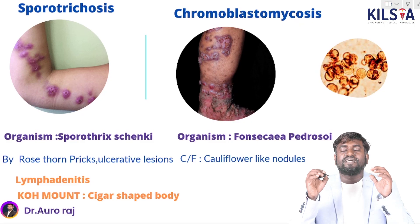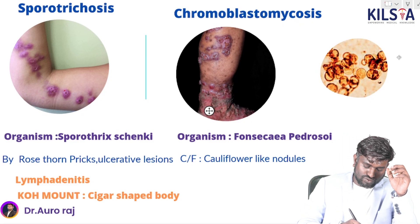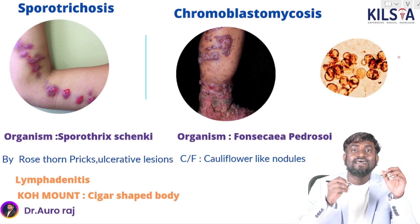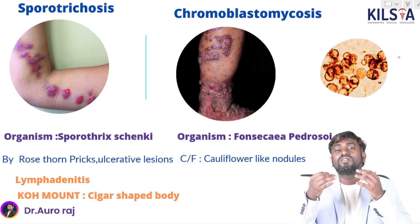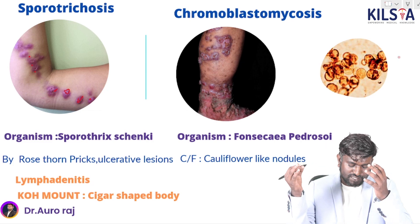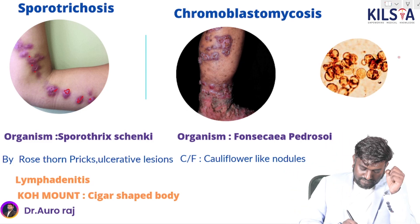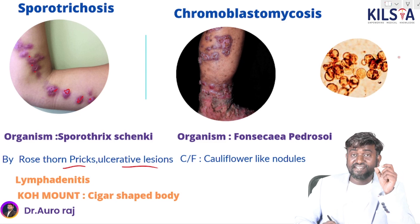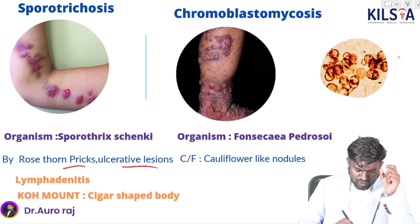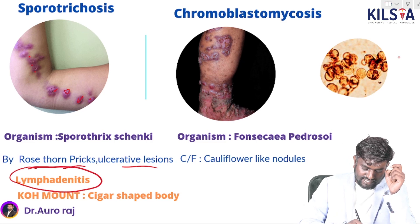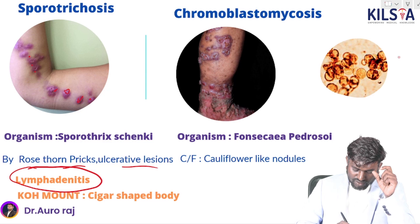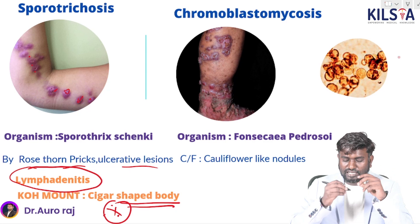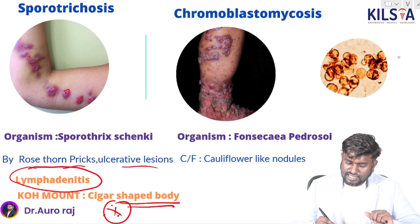This condition is sporotrichosis. It is caused by thorn prick — classically a rose thorn prick in farmers. It can lead to ulcerated lesions and most importantly causes lymphadenitis. On KOH mount, you will see cigar-shaped bodies.